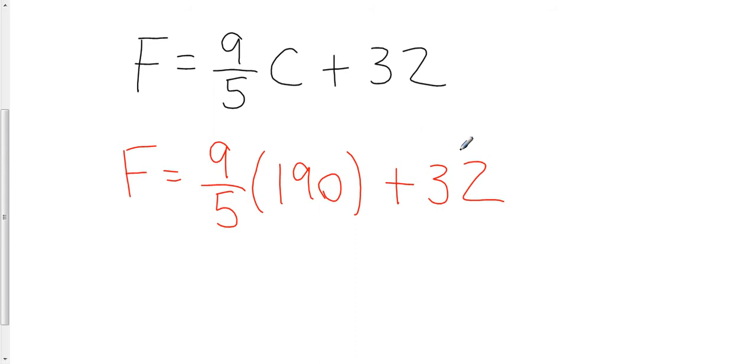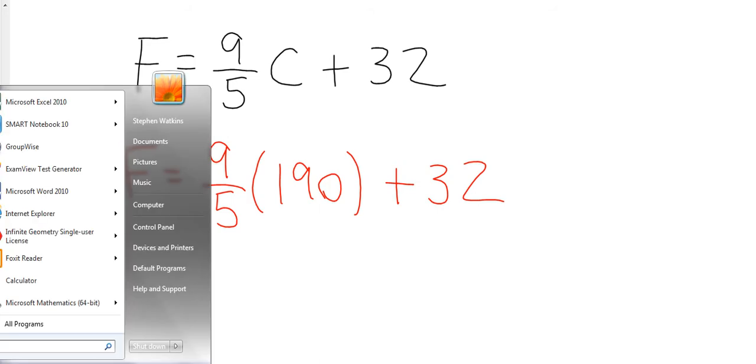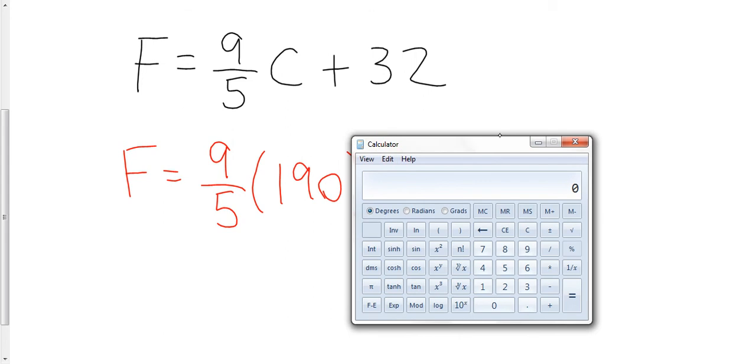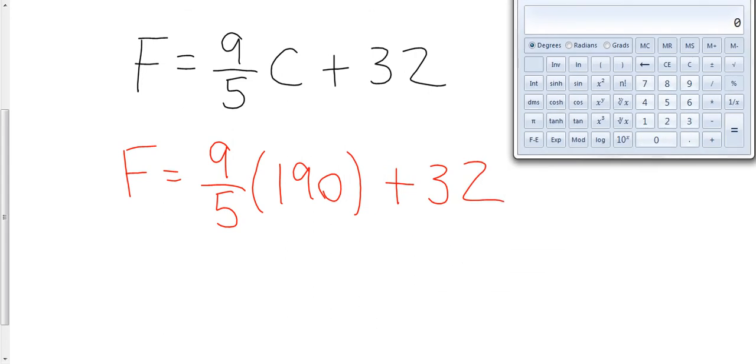And now all I have to do is plug this into my calculator. So let's see if I can find the Windows calculator here. Here we go. Okay, bring this over here. So 9 fifths in the calculator, some of you might have fraction buttons on your calculator, and you're welcome to use those. But 9 fifths is also a division statement. I can actually say 9 fifths is 9 divided by 5, and I'm multiplying that times 190. So times 190.